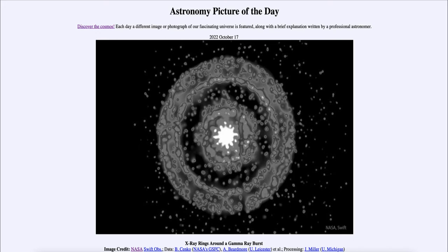Well, it is titled X-ray rings around a gamma ray burst. So what do we see here? Well, this is an example of a gamma ray burst, in fact known as gamma ray burst GRB 221009A.